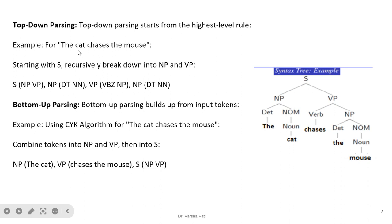Top-down parsing starts from the highest-level rule. It recursively breaks down S into NP and VP. NP breaks into a determiner and a nominal; the determiner converts to 'the', and nominal converts to a noun. VP is verb plus NP, and the verb comes under VBZ. It proceeds from top to bottom. Bottom-up parsing is the opposite — it builds up from the input tokens, as in the CYK algorithm. It starts directly with the words, forms phrases, and then moves upward.